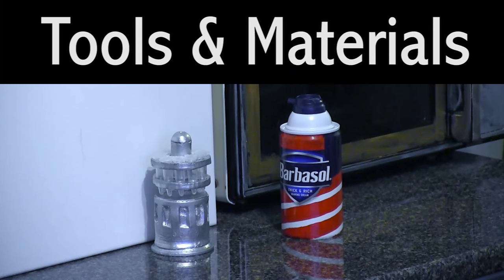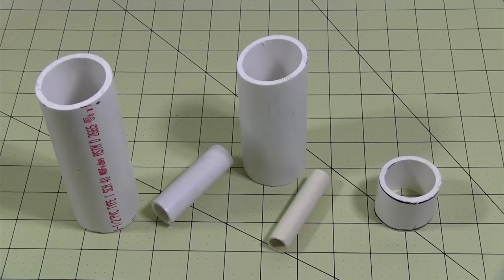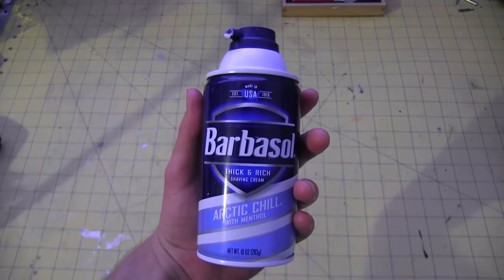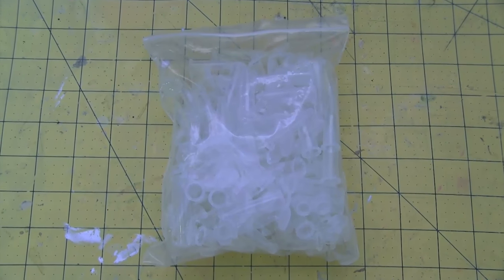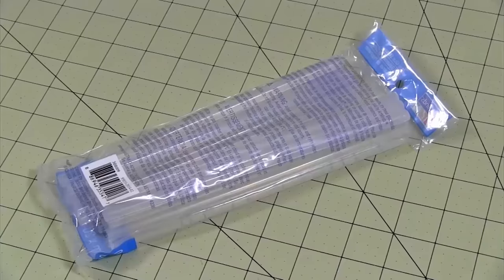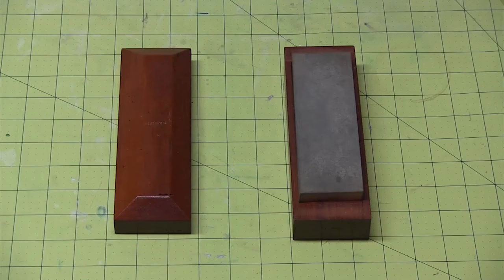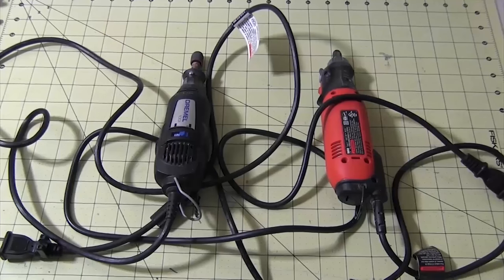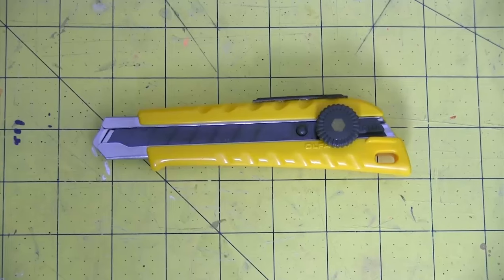For this build, you'll need scrap EVA foam, scrap PVC pipe, craft foam, a Sharpie, a Barbasol can, medical centrifuge vials (link in the description), a can opener, hot glue, paint, a sharpening stone, a respirator mask, goggles, a rotary tool, scissors, razor pens, or a box cutter.